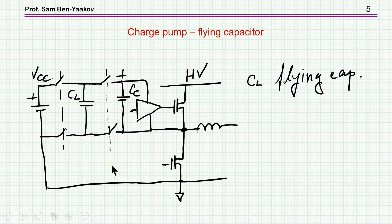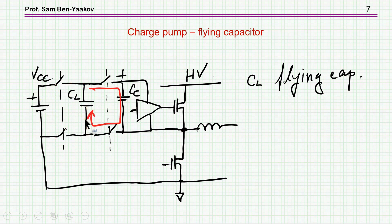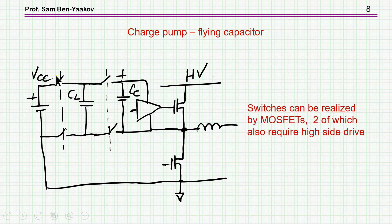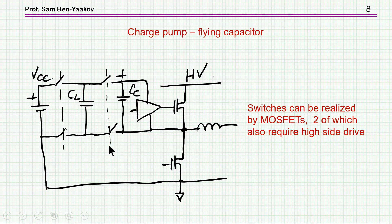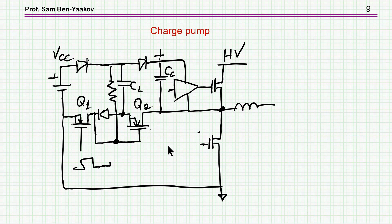The question is how to realize these switches and how to operate them. When one pair of switches is conducting, energy is transferred to the flying capacitor; when the other pair conducts, energy is transferred to the holding capacitor. One switch is referred to ground, so it can be an N-channel MOSFET; another could be a P-channel MOSFET. But the high-side switches must be high-voltage transistors and require their own drive scheme. I'm going to show one circuit that I think is a very neat solution.